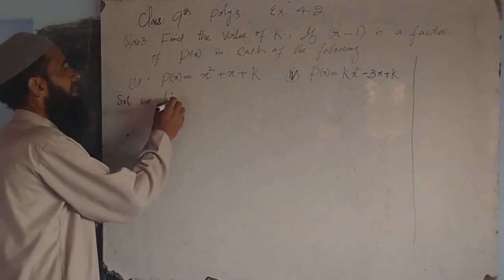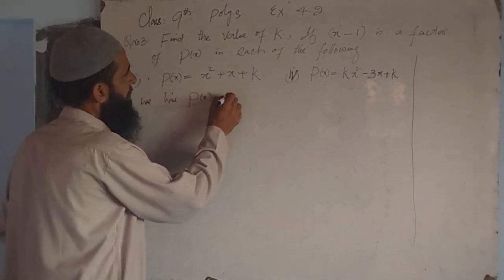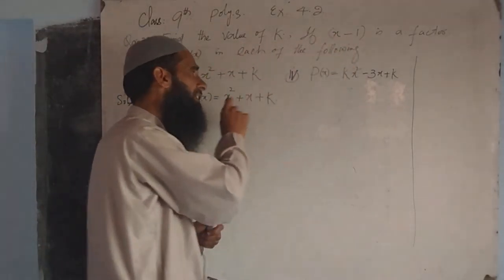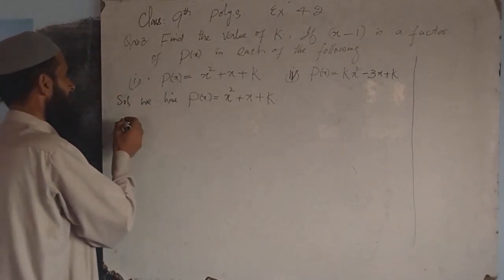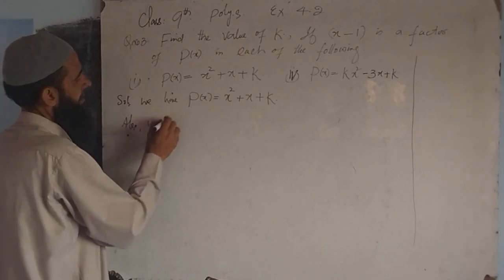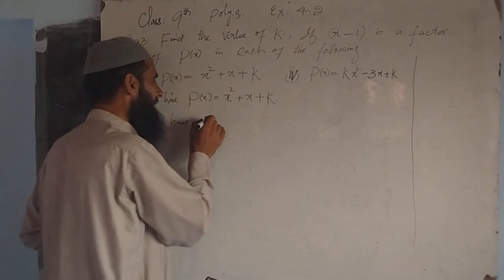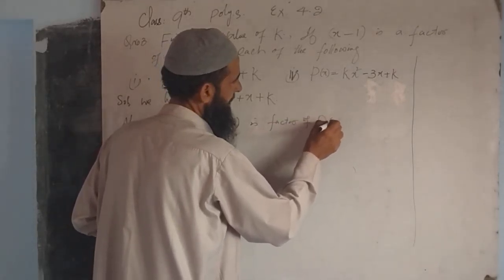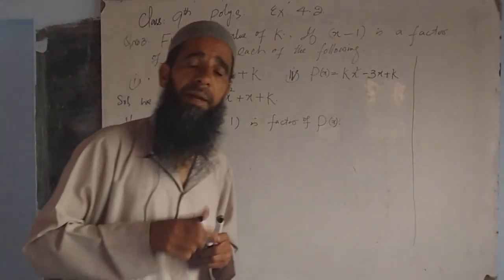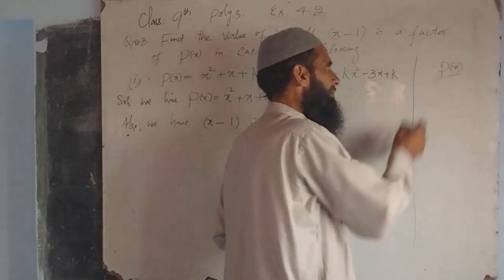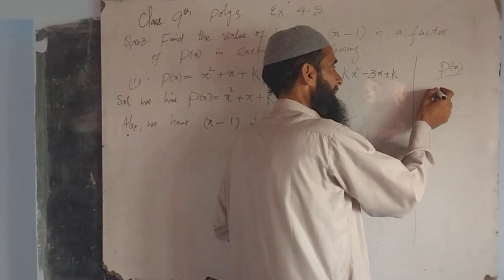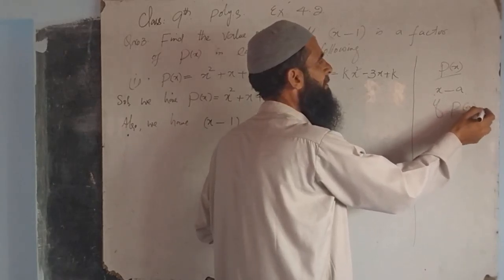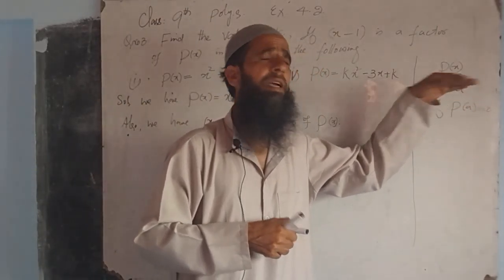Now we discuss the first part. We have the given polynomial p(x) = x² + x + k. Here x-1 is a factor of p(x). By the Factor Theorem: if p(x) is a polynomial of degree greater than or equal to 1, then x-a is a factor if p(a) is equal to 0.